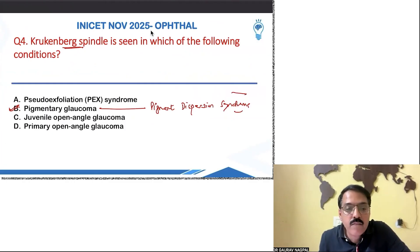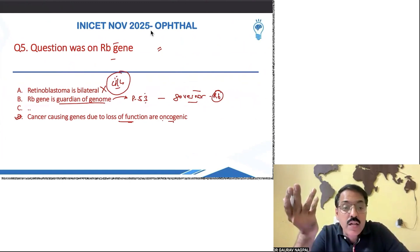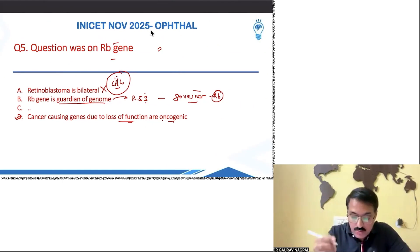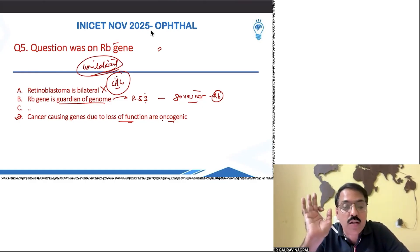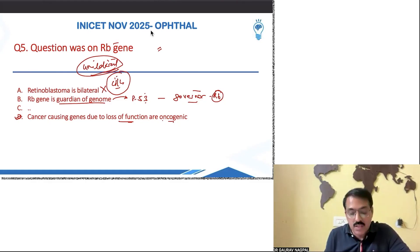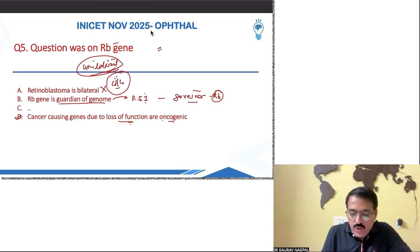RB — retinoblastoma — is always unilateral. It is never exclusively unilateral and never exclusively bilateral. Dr. Spurser clearly mentioned it is due to loss of function gene. There is more pathology here. One chat question mentioned a patient presenting with a fixed winter-cellar rosette.